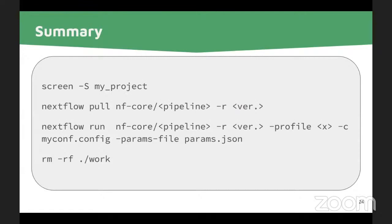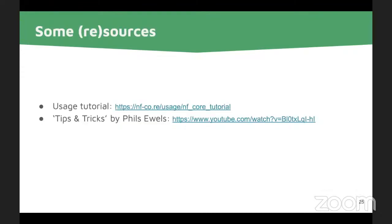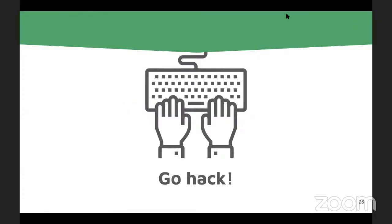To summarize, to run a pipeline: create a clean workspace, open a screen session, pull the pipeline you want to run, then run it with the right version, your institutional profile or others, your local configs, and your parameter files. Once done, remove the work directory, look at the results, and be excited that it finished. These slides are mostly based on the usage tutorial from the nf-core website — check it for more detailed information. Also check the tips and tricks talk that Phil gave from the last hackathon, which has more advanced tips.